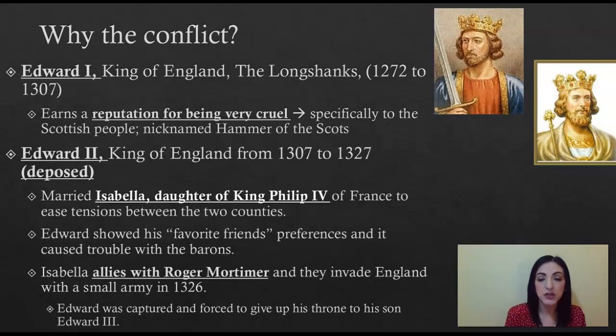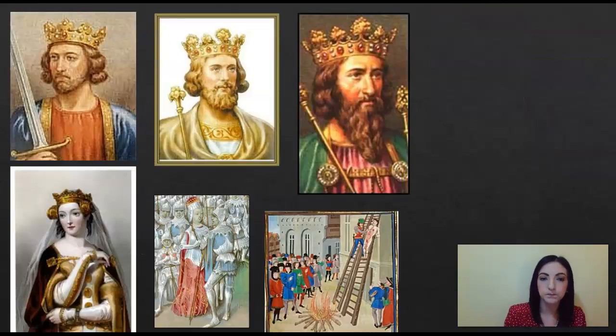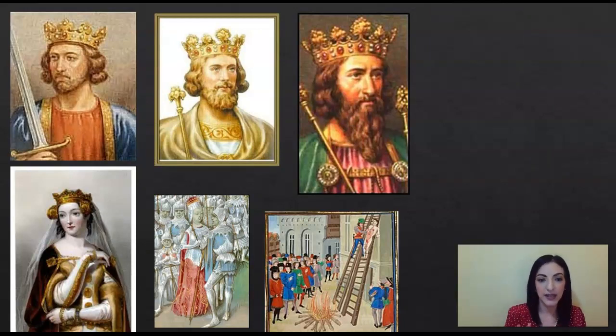Isabella decides to take a lover and ally herself with a man named Roger Mortimer. Together, they basically overthrow Edward II with a small army in 1326. Edward was captured and forced to give up his throne to his young son, Edward III. One smart thing Isabella did was that immediately upon marrying Edward II, she gave him an heir, which added to her legitimacy as queen mother — the mother to the future king of England.